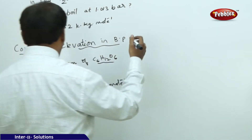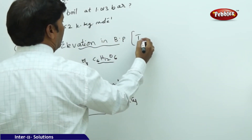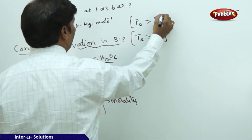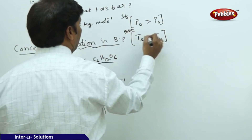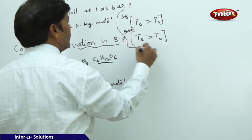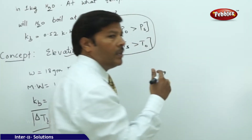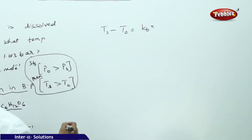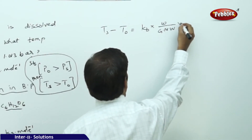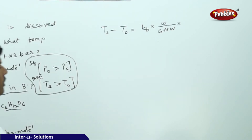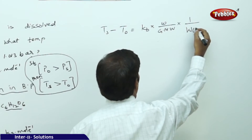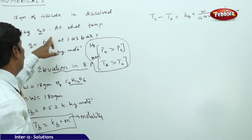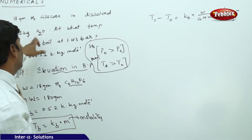Expanding ΔTb: Ts − T₀ = Kb × (w / gram molecular weight) × (1 / weight of solvent in kg). Pure water boils at 100°C = 373 K, so T₀ = 373 K. Substituting: Ts − 373 = 0.52 × (18 / 180) × (1 / 1 kg). This gives 18/180 = 1/10, so ΔTb = 0.52 × 0.1 = 0.052 K.